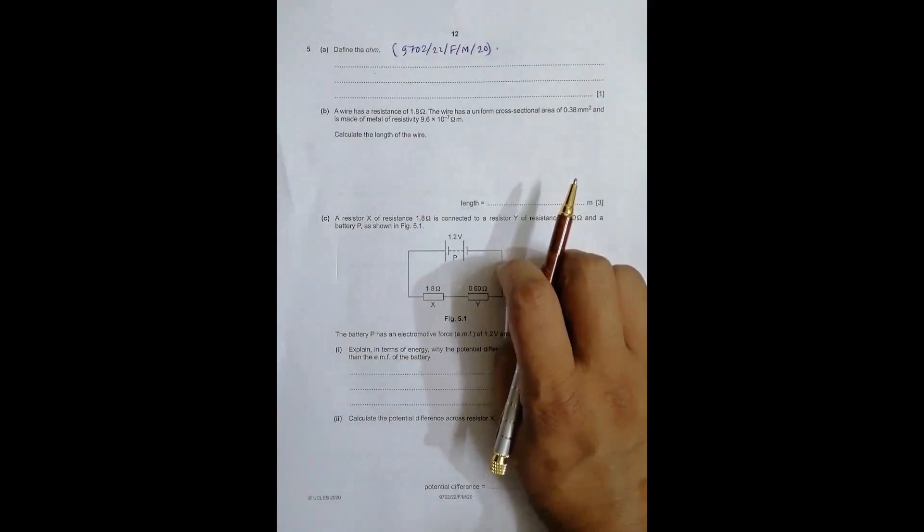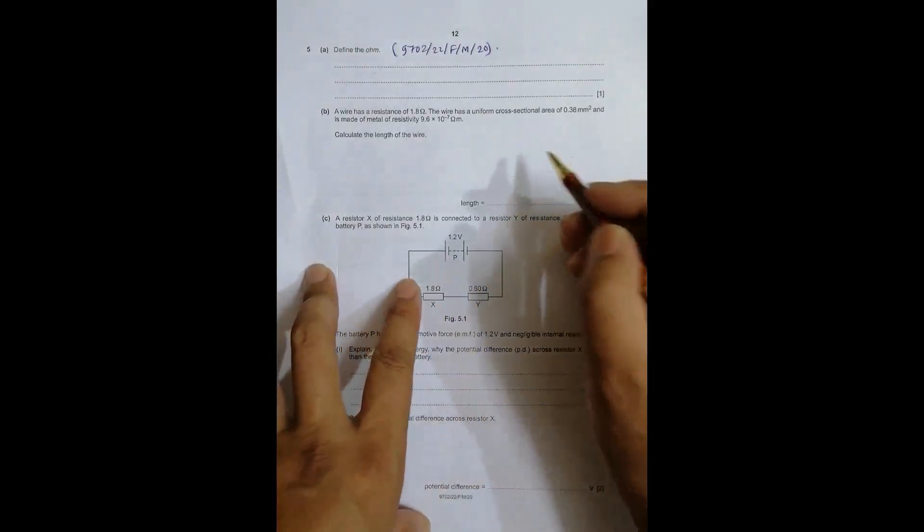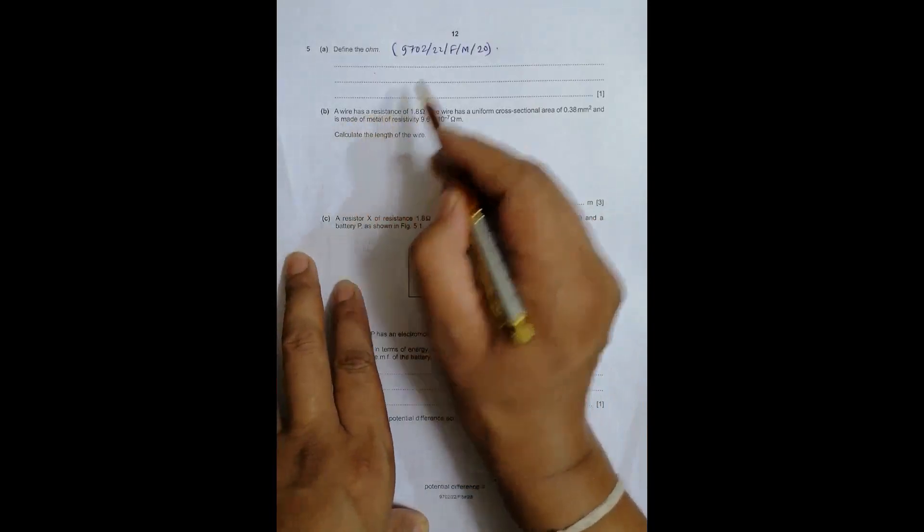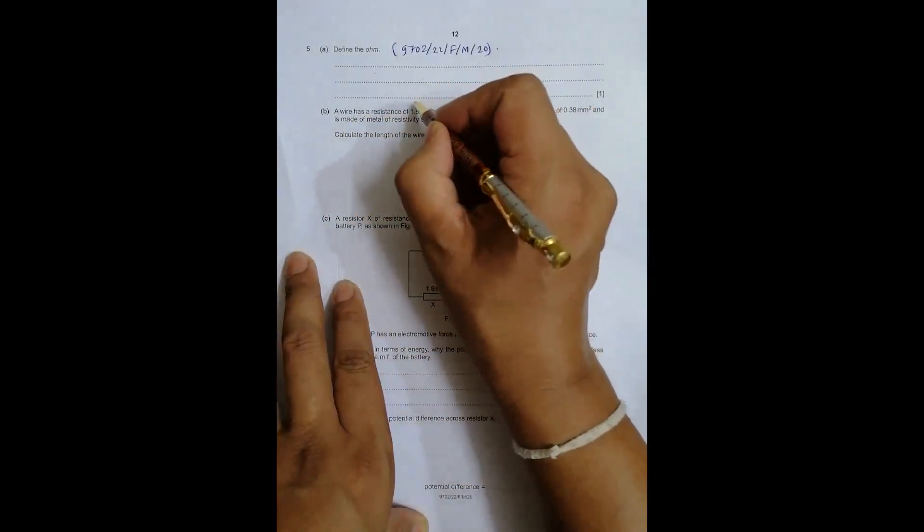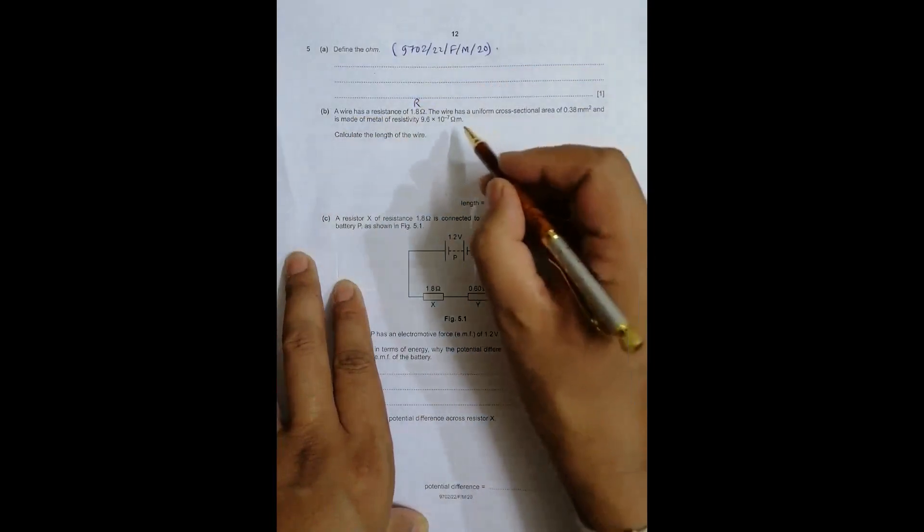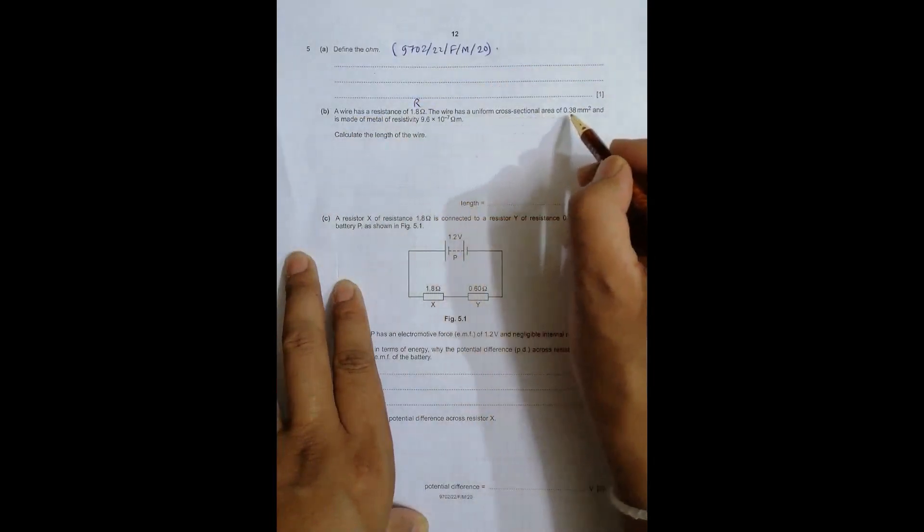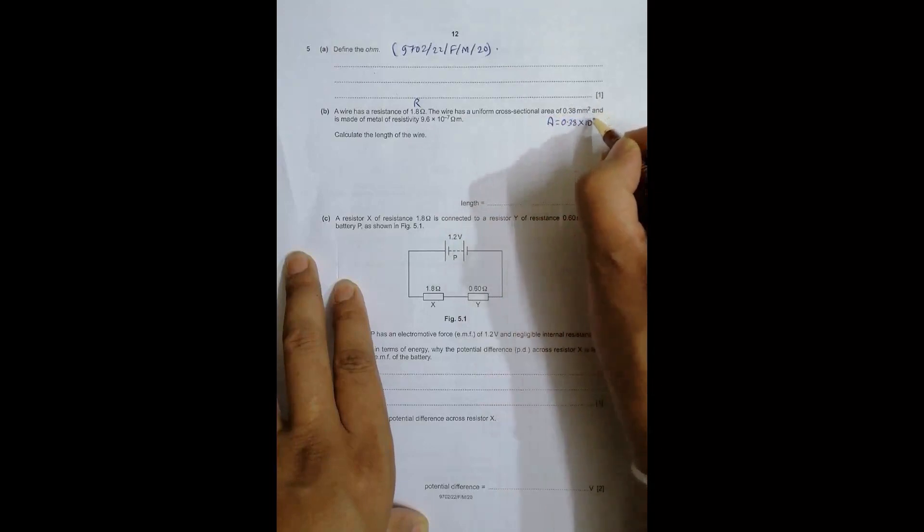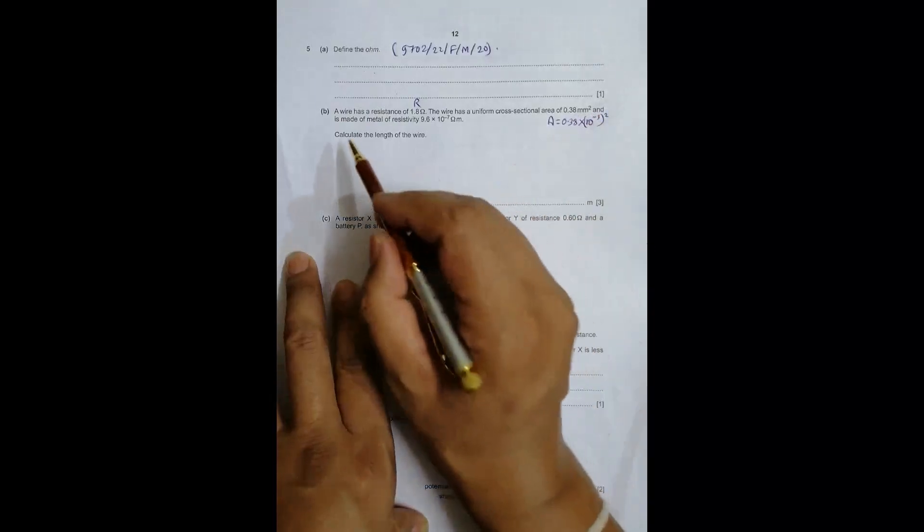Part B says a wire has a resistance R of 1.8 ohm. The wire has a uniform cross-sectional area of 0.38 millimeter squared, so A = 0.38 × 10^-3 squared. It is made of metal with resistivity ρ given. Calculate the length of the wire.